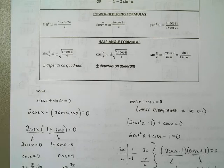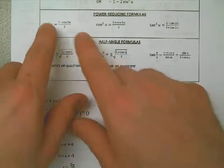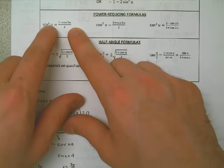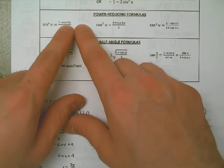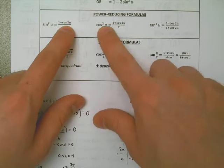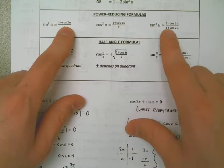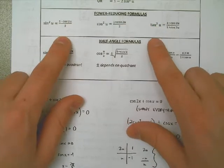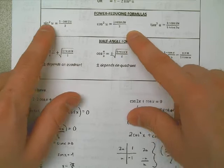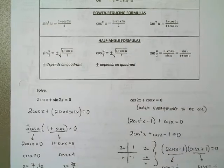In this video I'm going to be talking about the power-reducing formulas. What we need to know about the power-reducing formulas is that we can go from sine squared down to cosine to the first, cosine squared down to cosine to the first, tangent squared down to cosine to the first. We can use these formulas to reduce the power, the exponent, that we are using within a formula.